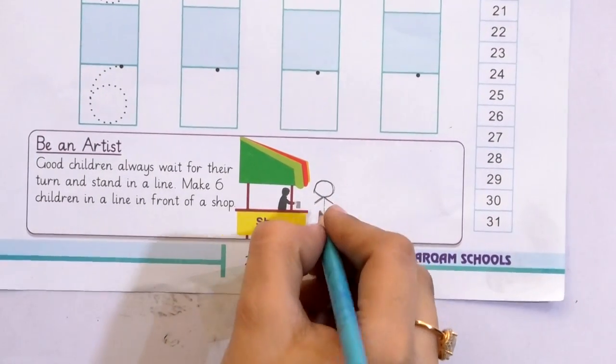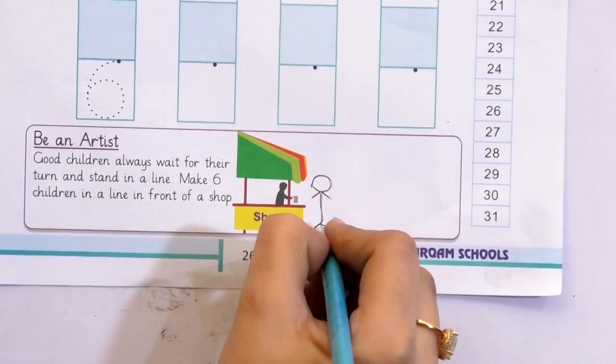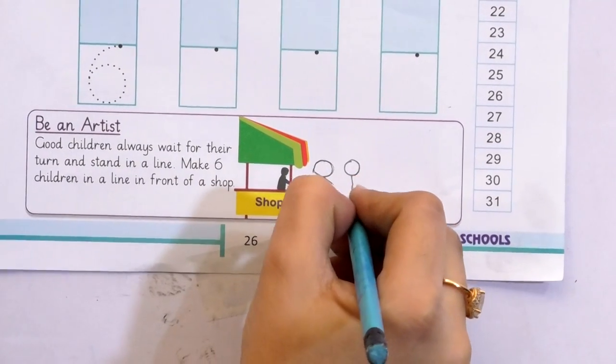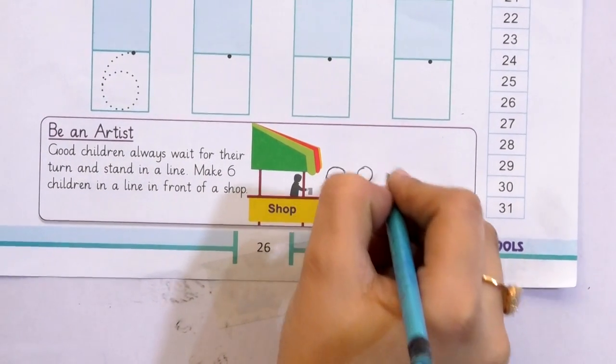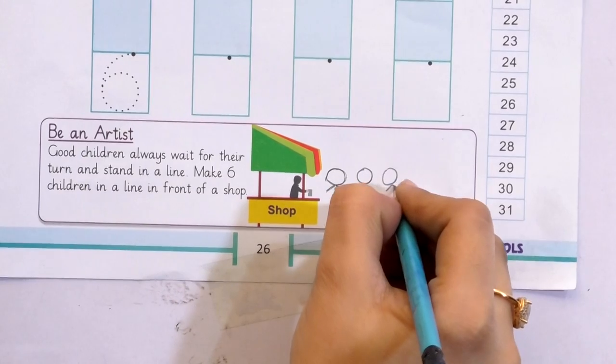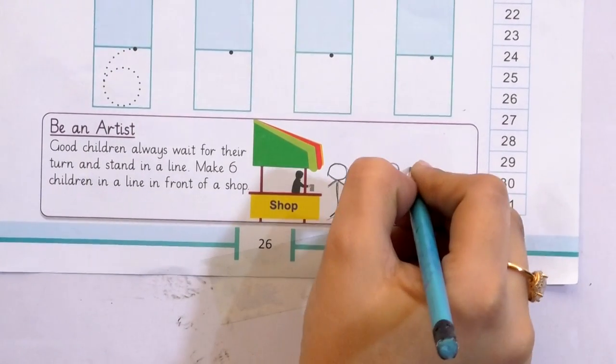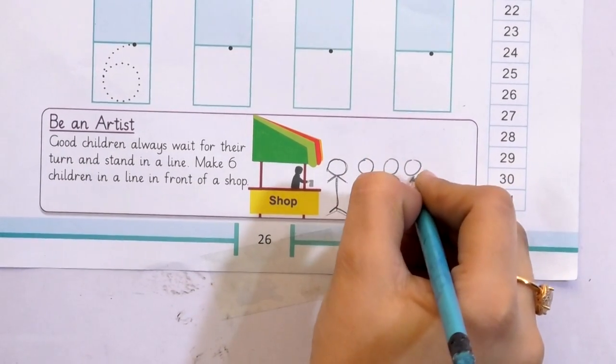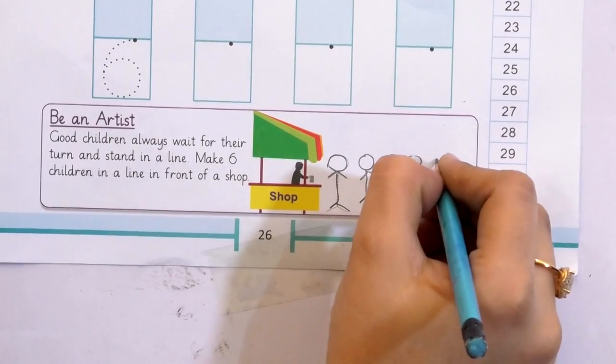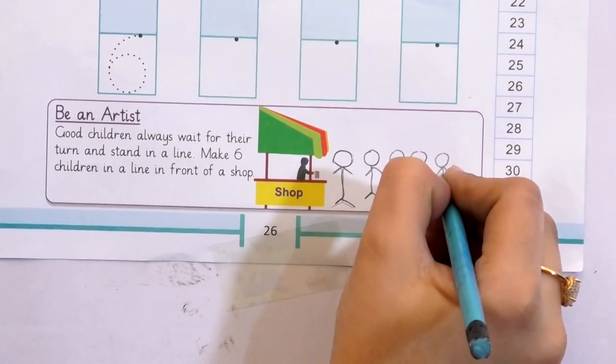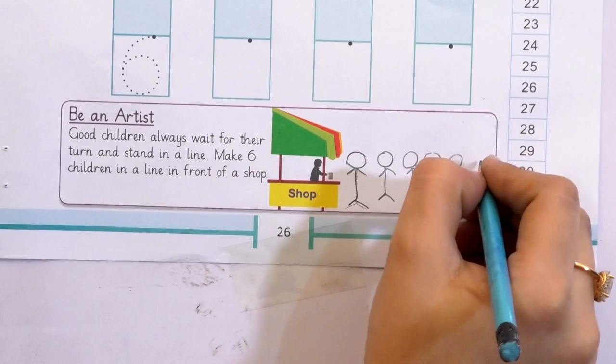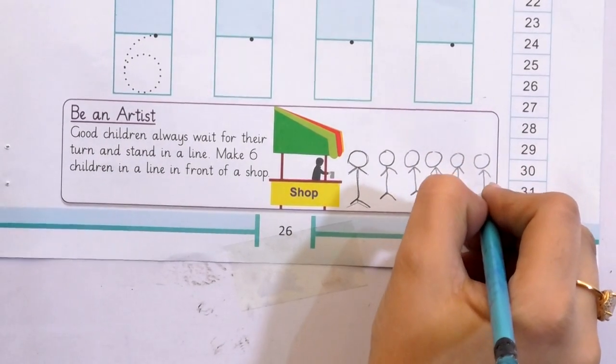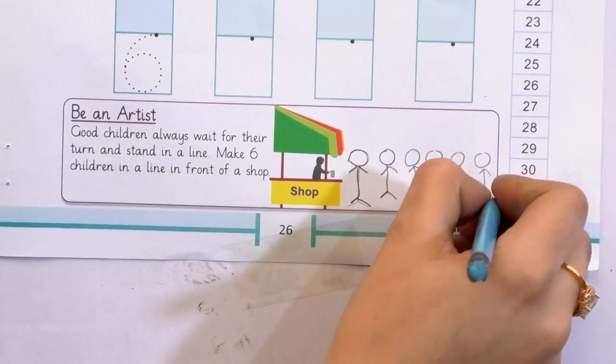Now draw on the dotted lines. 1, 2, 3, 4, 5, and 6. Very good.